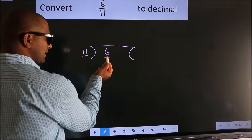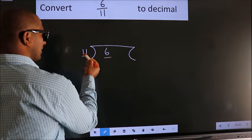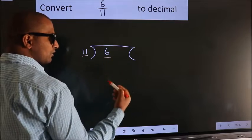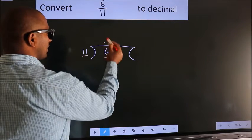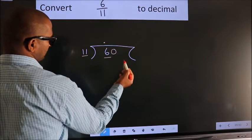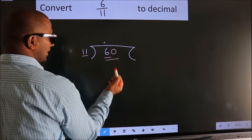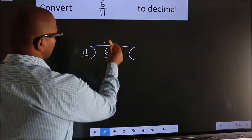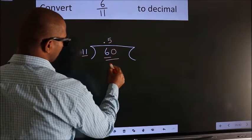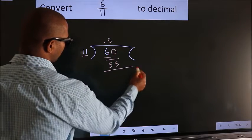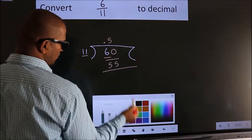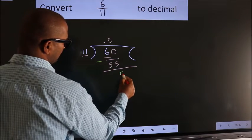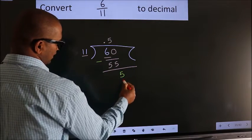Here we have 6 and 11. 6 is smaller than 11, so what we do is put a dot, take 0 here to make 60. A number close to 60 in the 11 table is 11 times 5, which is 55. Now we subtract and get 5.